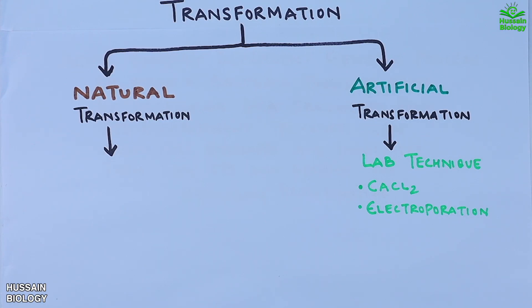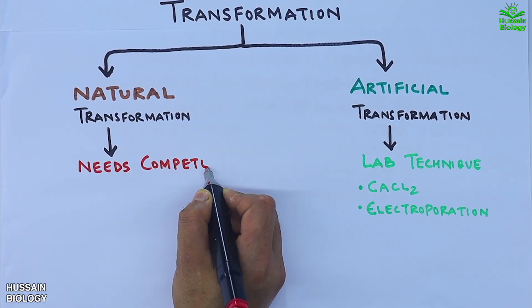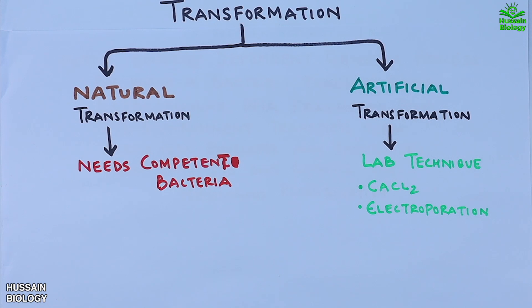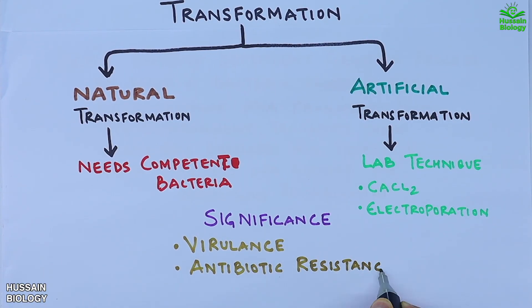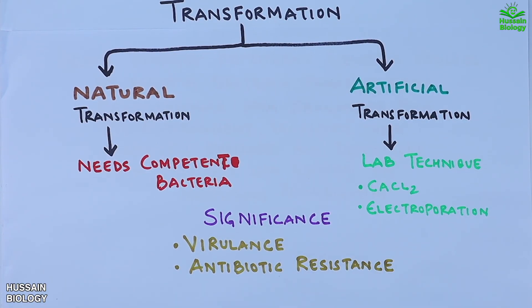On the other side we have natural transformation. For this process we just need competent bacteria. The bacteria can naturally take up free DNA from its environment without any help. It happens on its own under certain conditions. The significance of transformation is virulence and antibiotic resistance.